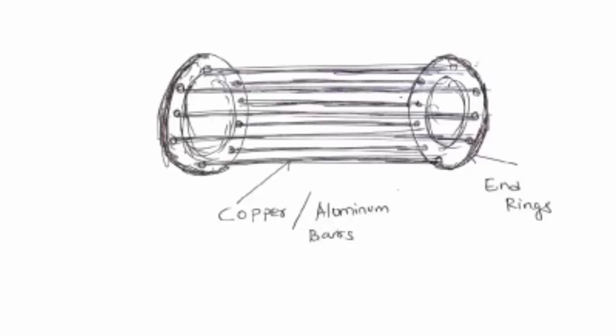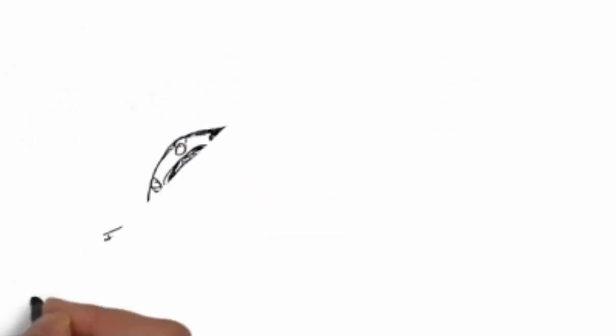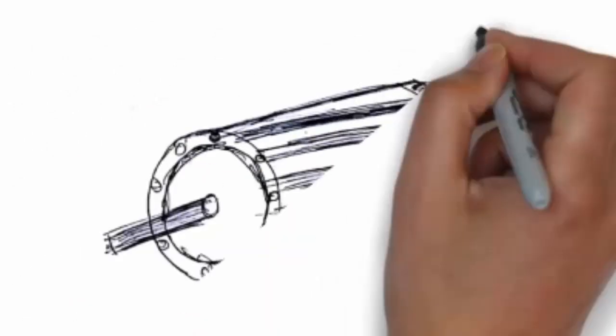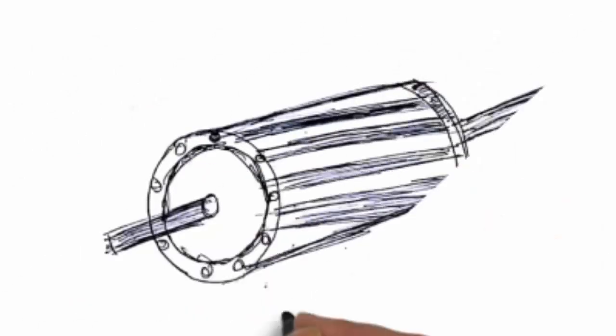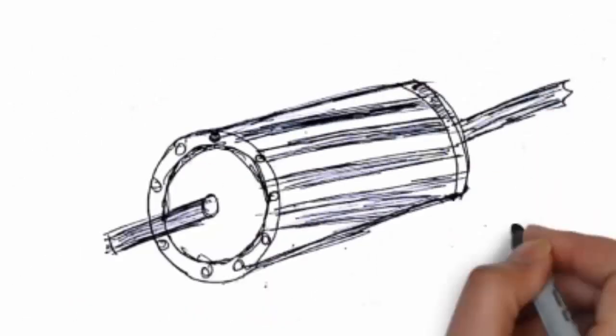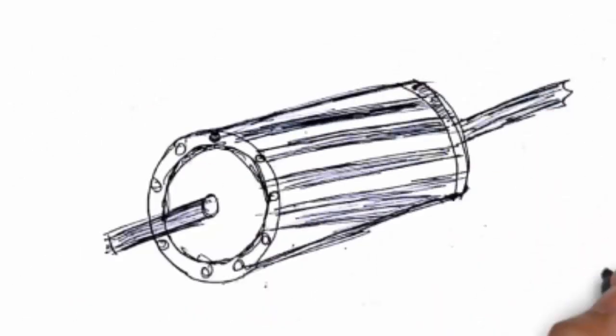These bars carry the rotor current and are the ones which interact with the stator's rotating flux. They produce an EMF in the rotor by the rotor bars, and when the EMF is produced the rotor will also start to rotate.